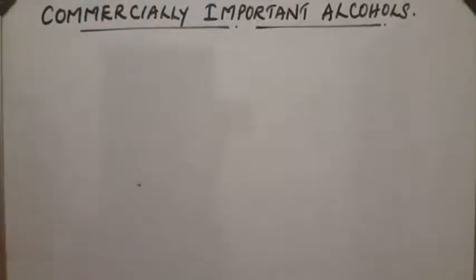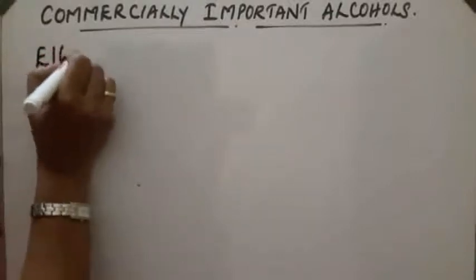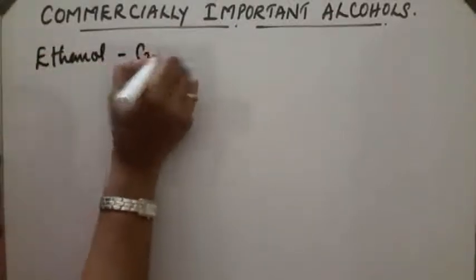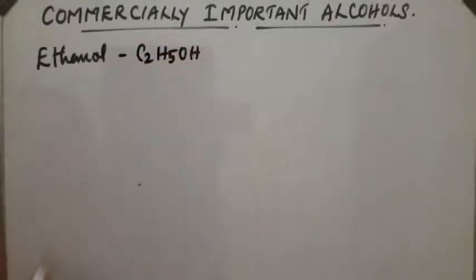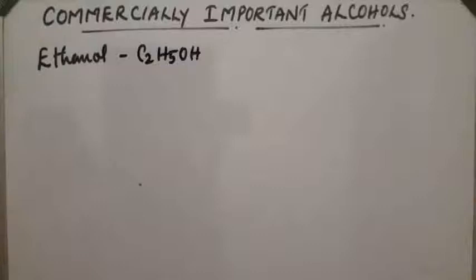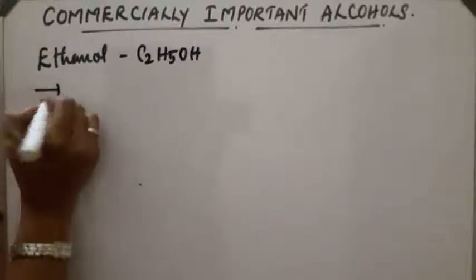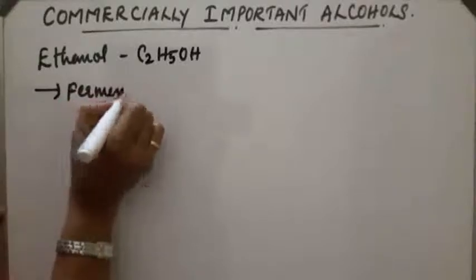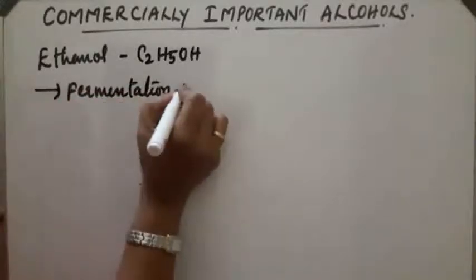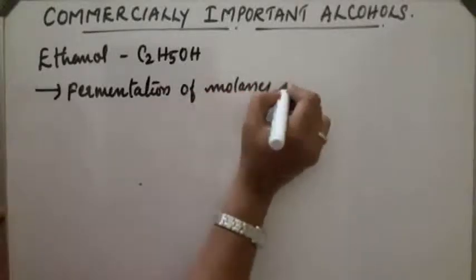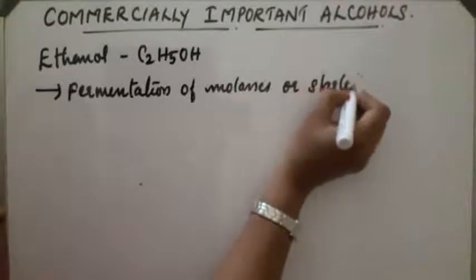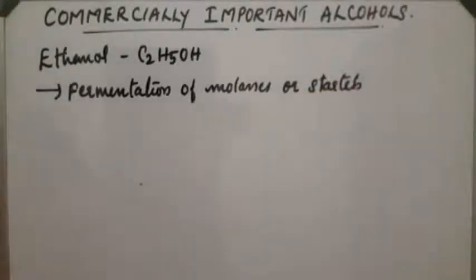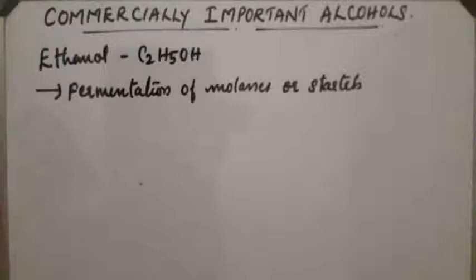The next commercially important alcohol is ethanol — C2H5OH. Ethanol is obtained by the fermentation of molasses or starch. Fermentation is a slow process in which an organic compound is decomposed into simpler compounds by the action of a biological catalyst called enzymes.